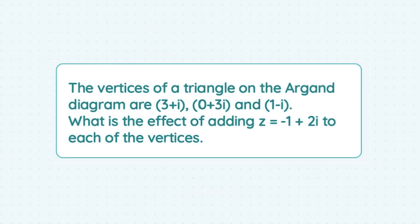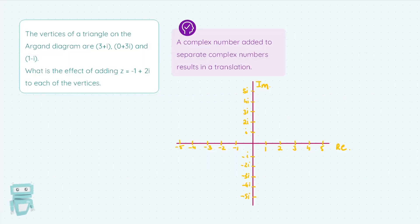Now we're looking at the effect of adding a complex number to complex numbers on an Argand diagram. So firstly, let's plot these original complex numbers: 3+i, 0+3i, and 1-i on the Argand diagram.